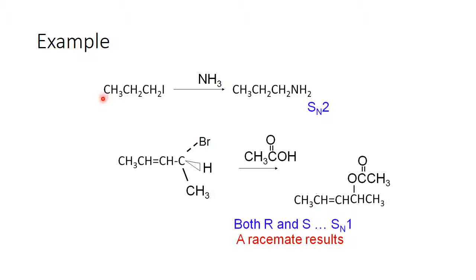In the first example, I see that the carbon is primary, so automatically I say it has to be SN2. I see there's a reasonable nucleophile and an excellent leaving group. The result: an SN2 reaction occurs.